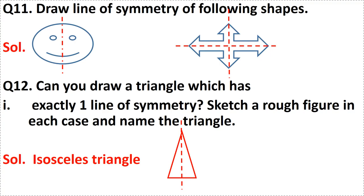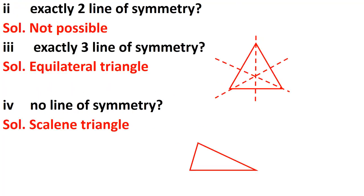The second part asks for a triangle with exactly two lines of symmetry. That is not possible — we cannot draw any triangle which has exactly two lines of symmetry.